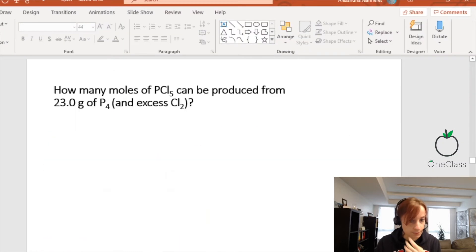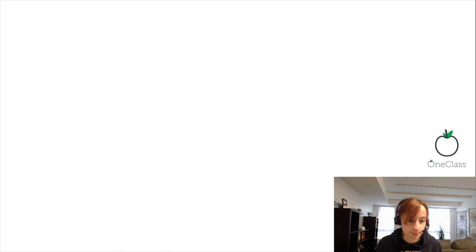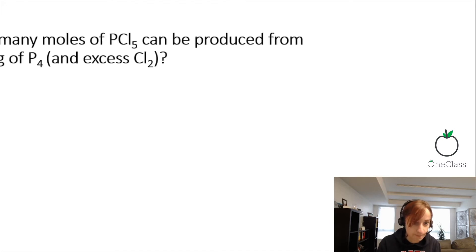First of all, we need to write out a balanced chemical formula. They gave us the reactants and the products, but the formula is definitely not balanced. So we're starting with P4 and Cl2. Those two react together to give PCl5.